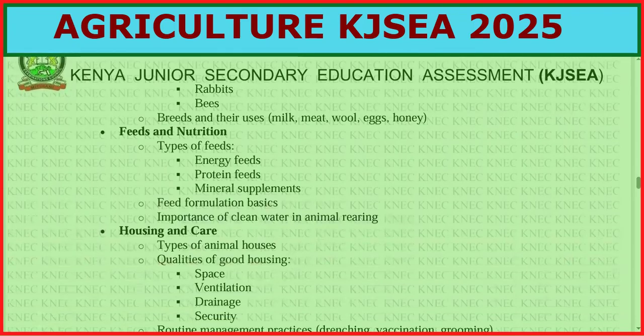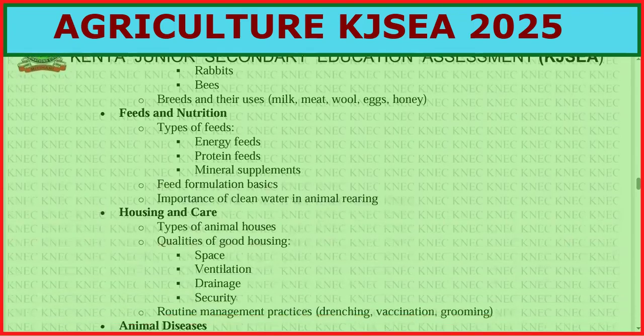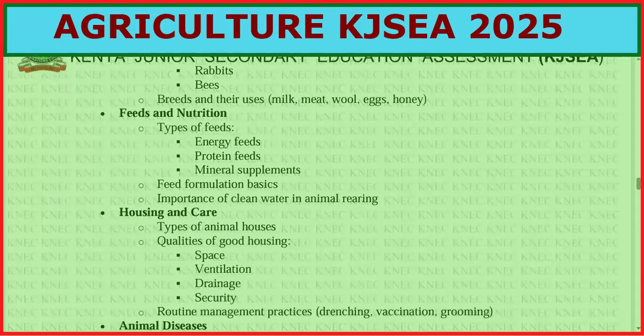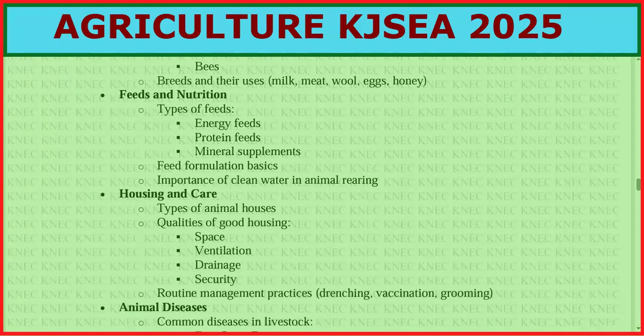Also remember rabbits and bees. Then the breeds and their uses: milk, meat, wool, eggs, honey — wool from goats and sheep, eggs from poultry, and so on.